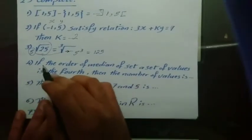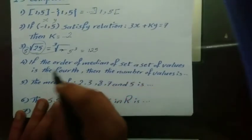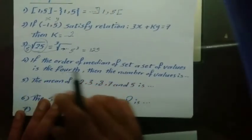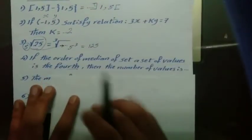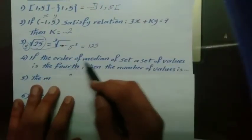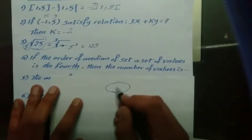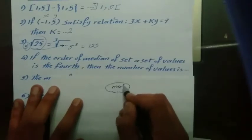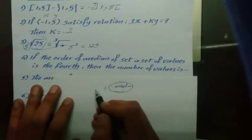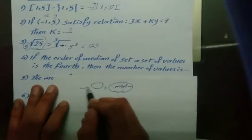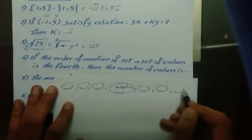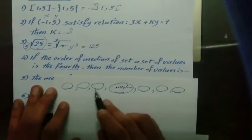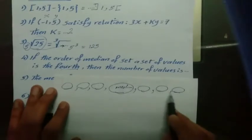Question 4: The order of the median of a set of values is 4th, then the number of values is what. If the median is the 4th value, we have three values before the median and three values after the median, giving a total of 1, 2, 3, 4, 5, 6, 7 values.